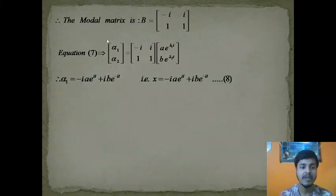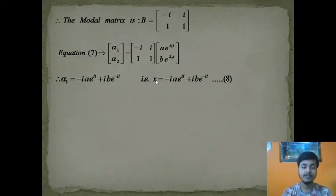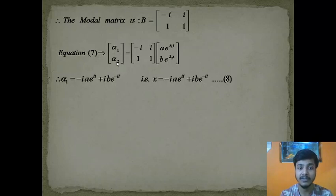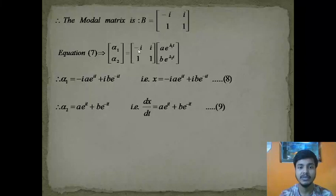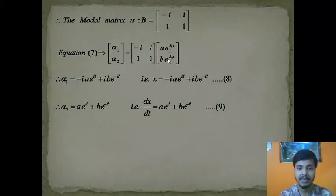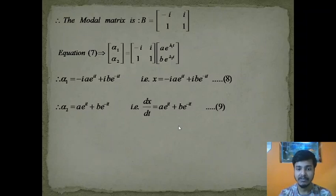Since α₁ = x and α₂ = dx/dt, we have two equations: x = −ia·e^(it) + ib·e^(−it) (equation 8), and dx/dt = a·e^(it) + b·e^(−it) (equation 9), where λ₁ = i and λ₂ = −i. Our objective is to find the constants a and b using the initial conditions.